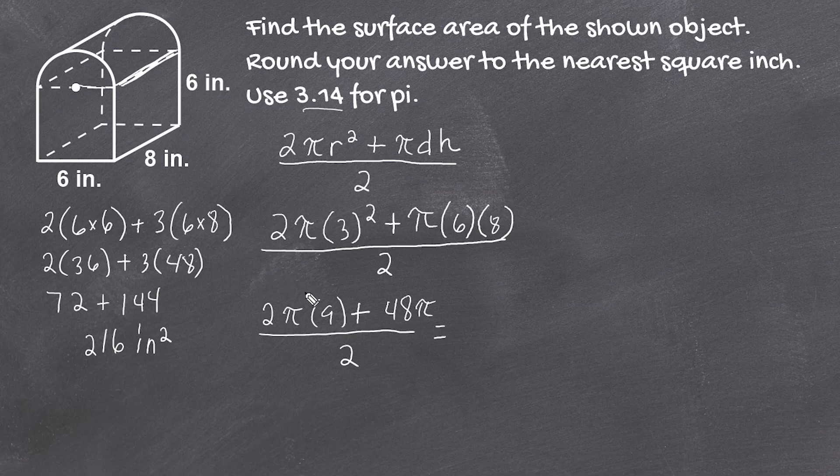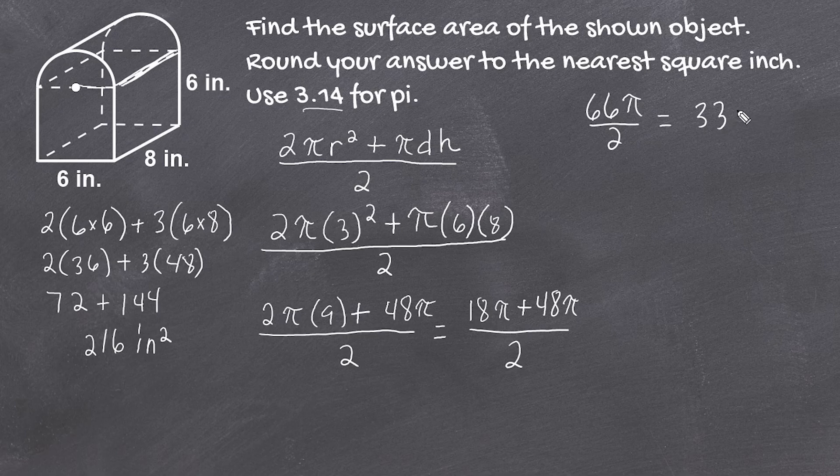Now we take 2 times 9, which is 18π, and combine that with 48π. We're combining like terms, and we have to divide by 2. So 18 plus 48 is 66π, divided by 2, which gives us 33π.